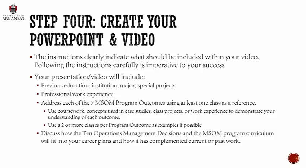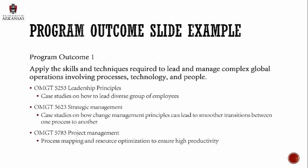Here's what a slide example would look like: you've got program outcome one listed out, then underneath you'll talk about the classes you took that demonstrate your understanding of that outcome. You'll do this for each and every one of all seven program outcomes. The website's comp exam instructions list the program outcomes and the courses where you should have learned good information to demonstrate each outcome. So you can look through that list, decide which classes you took, and talk about how those classes — maybe case studies, projects you worked on — helped you gain an understanding of that program outcome.